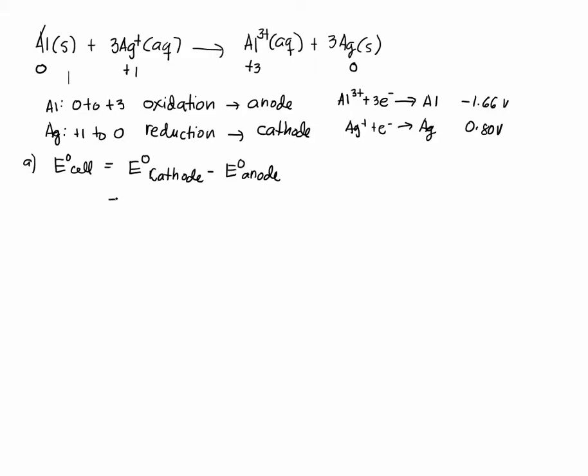So the EMF in standard conditions is equal to E at the cathode which is silver, zero point eight zero volts, minus E at the anode which is aluminum, negative one point six six volts. So what would that be? That will give us a voltage of two point four six volts. So this is the EMF in standard conditions.